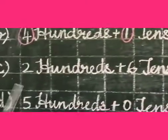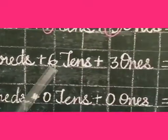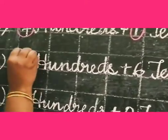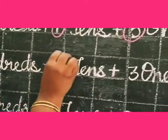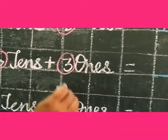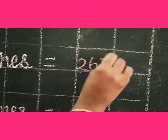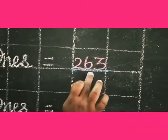Next, 2 hundreds plus 6 tens plus 3 ones. Now I am going to circle the numbers: 2, 6, 3. And I am going to write the number. 2, 6, 3 equals 263.